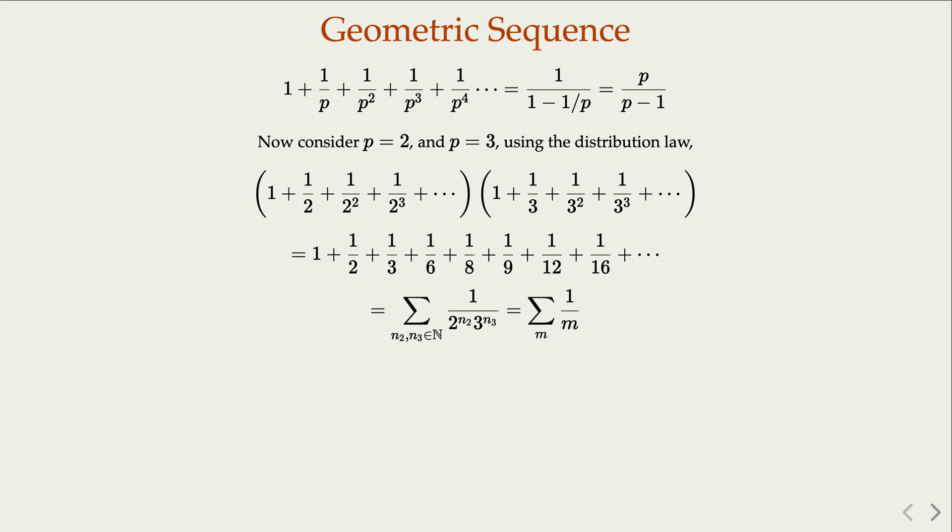Or we can just, for shorthand, say that it's summation 1 over m for all m such that the prime factors contain only 2 or 3's power—2 raised to some power, 3 raised to some power. This is a subset of natural numbers.